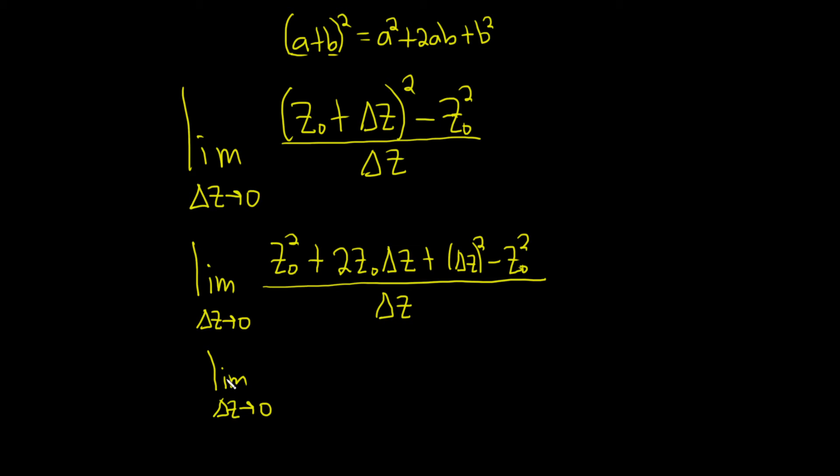And let's see, oh look, the z0 squared's cancel, that's nice. So we have 2z0 delta z plus delta z squared, all being divided by delta z.